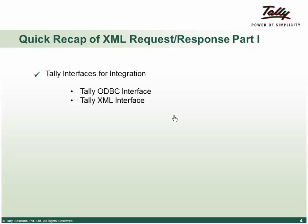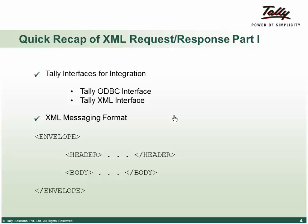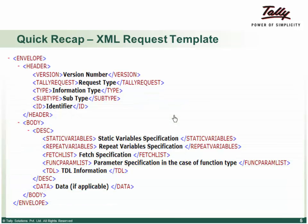In the XML request-response recap, data can be fetched through a DBC and XML interface. The messaging format uses an envelope with two sections: a header section and a body section. In the header we require the version, Tally request type, and depending on the type, a subtype and identifier. In the body we have the description and data — description can contain static variables, repeat variables, specialist function parameters, TDL tags, and TDL information.